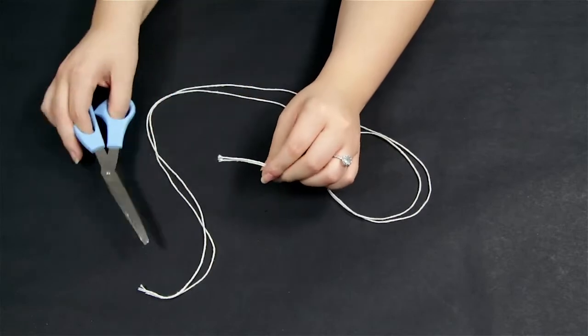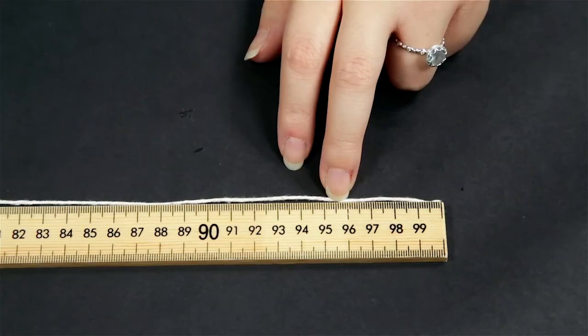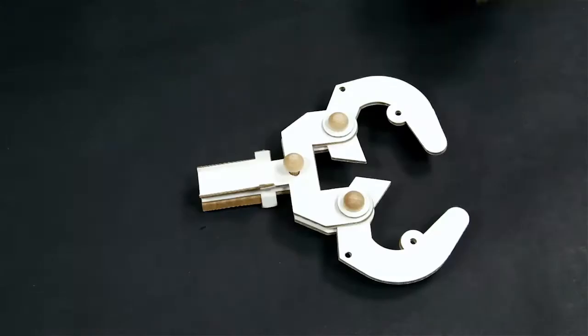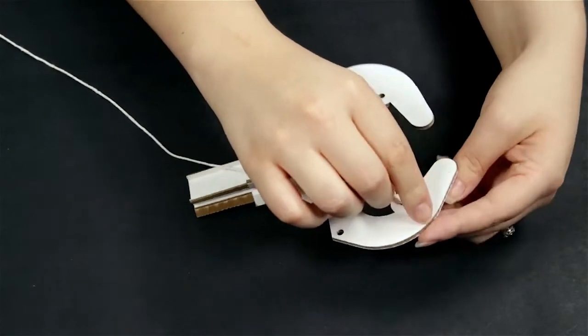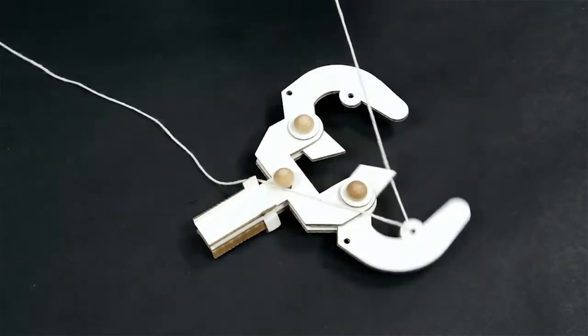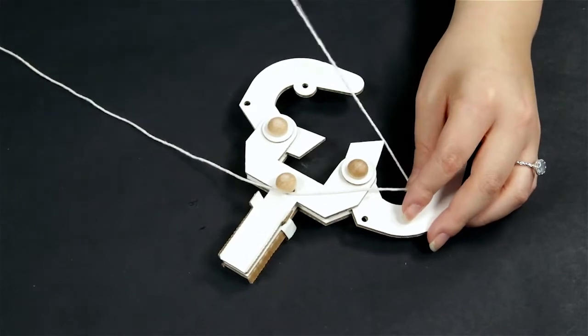Step 11: Cut the string in half. You will need about 100 cm for each side. Step 12: Feed one string through the hole on the inner side of one finger of the claw. Pull it through so the string is halfway through.